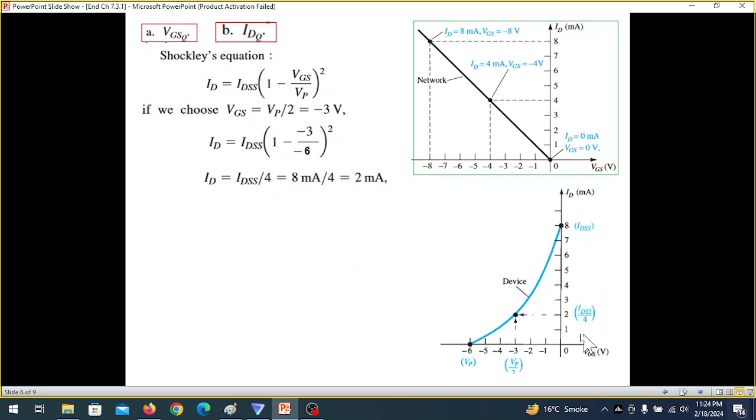Now we'll superimpose these two. So you can see this from the original graph. We are superimpose only this point here, 4 and 4. And then we can connect this. So we can connect. And this is our network line. And wherever it intersects, that is our Q point.